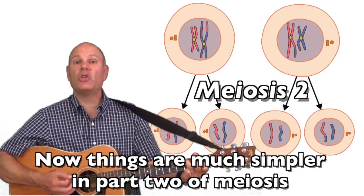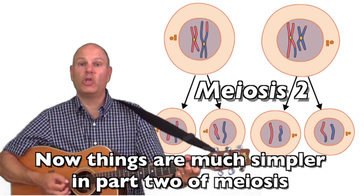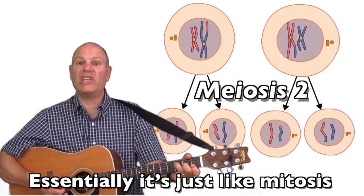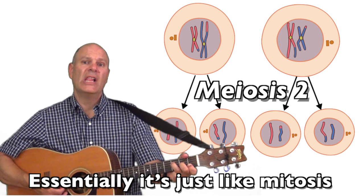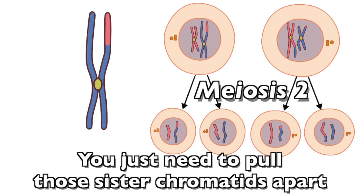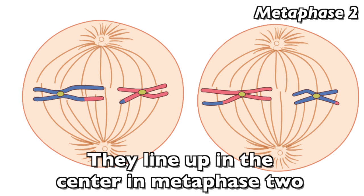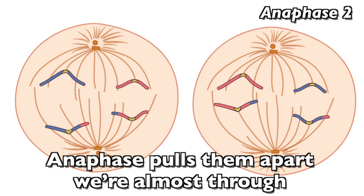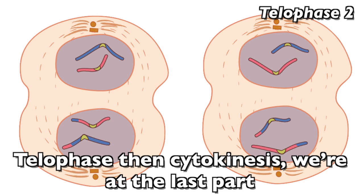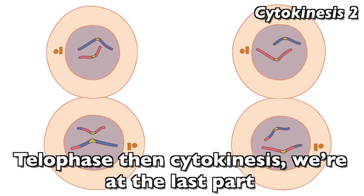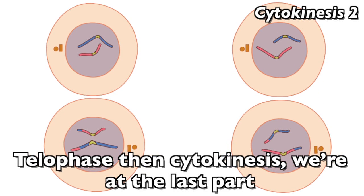Now things are much simpler in part two of meiosis — essentially it's just like mitosis. You just need to pull those sister chromatids apart. They line up in the center in metaphase two; anaphase pulls them apart. We're almost through. Telophase, then cytokinesis — we're at the last part.